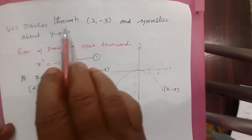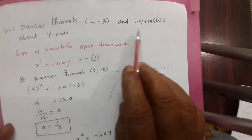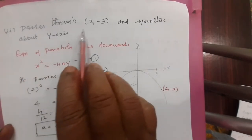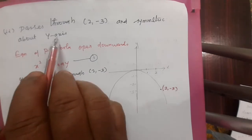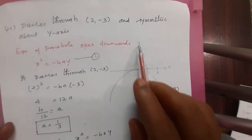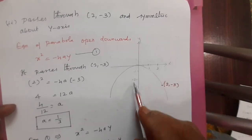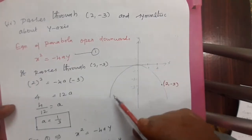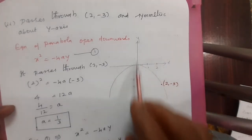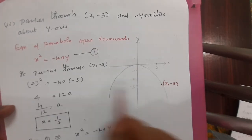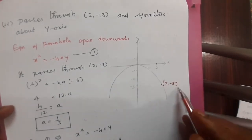Now the second subdivision: find the equation of the parabola. Here the parabola passes through the point 2 comma minus 3 and is symmetric about the y-axis. It does not pass through the origin. See the diagram carefully — draw the x-axis and y-axis, then plot the point 2 comma minus 3. On the x-axis mark 2, on the y-axis mark minus 3. This is the point 2 comma minus 3.